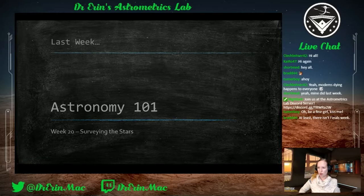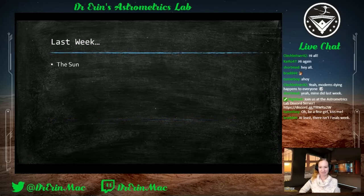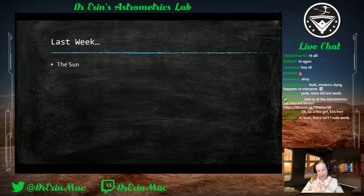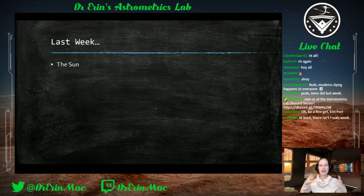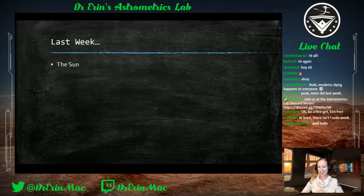Last week we talked about our own Sun — the different layers, what processes are going on inside. Remember, hydrogen is fusing into helium in the center of the Sun; that process releases radiation that makes its way out and gets radiated as light. We talked about solar wind, the corona, and solar flares.